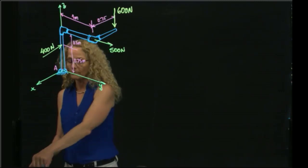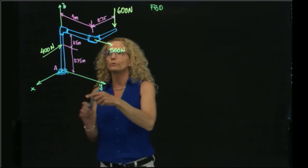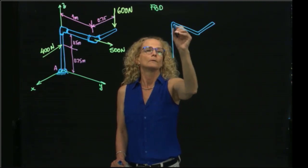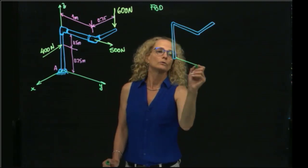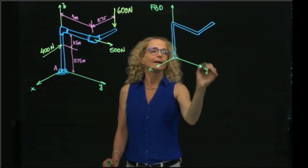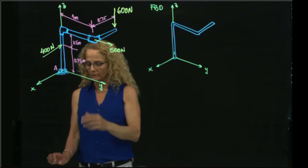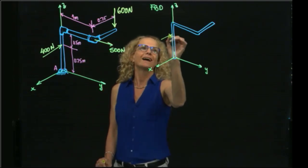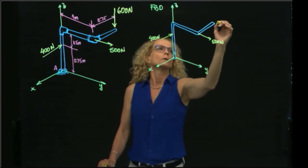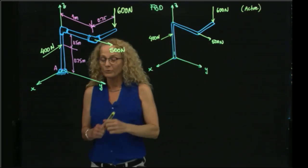Let's draw our free body diagram, which is always the first step. We reproduce our beam and isolate the pipe from the surrounding. We take the support out and place as many reactions as motions are restricted. Let me write the active forces first, which are the forces being applied to the system — those three forces.